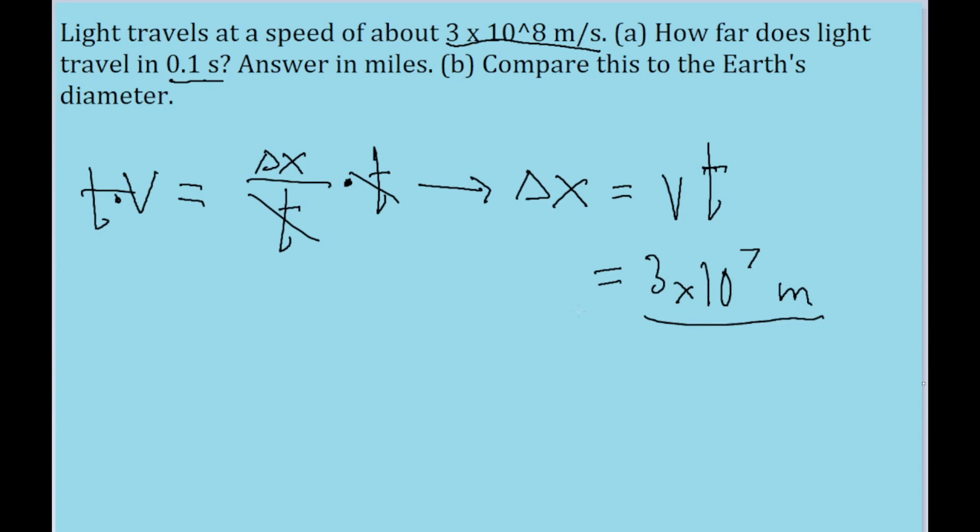So this is how far the light traveled, but the problem mentions that it wants us to answer in miles. So we're going to have to do a quick unit conversion on this. So I'll rewrite the answer real quick. 3 times 10 to the power of 7 meters. And we want to convert this into miles.